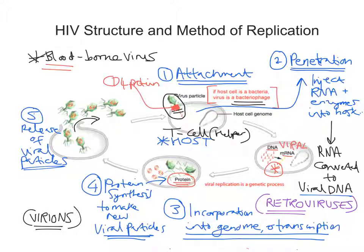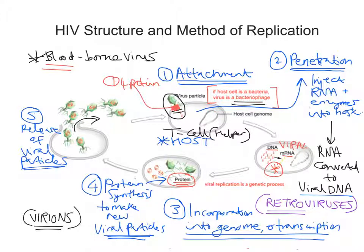A common exam question worth six marks is: how does HIV cause the symptoms of AIDS? All you have to do is remember how important helper T cells are in cell-mediated immunity. Without them, you can't stimulate B cells to produce antibodies, you can't stimulate cytotoxic T cells to destroy pathogens, and you don't produce memory T cells. That is when the immune system is compromised, making secondary infections more likely. It's these infections that kill AIDS sufferers, not HIV specifically.